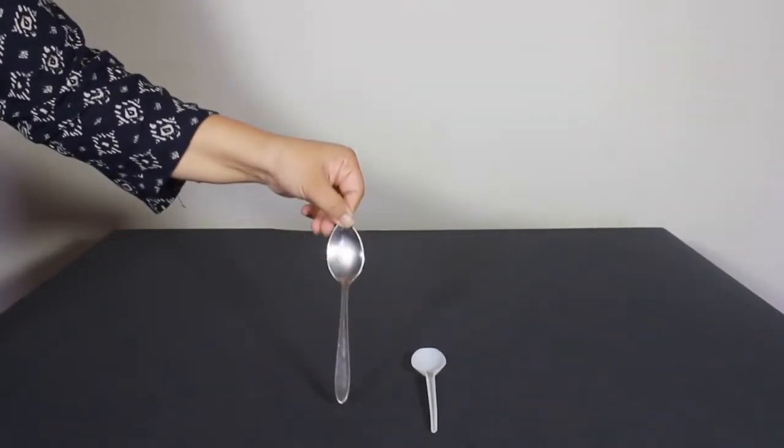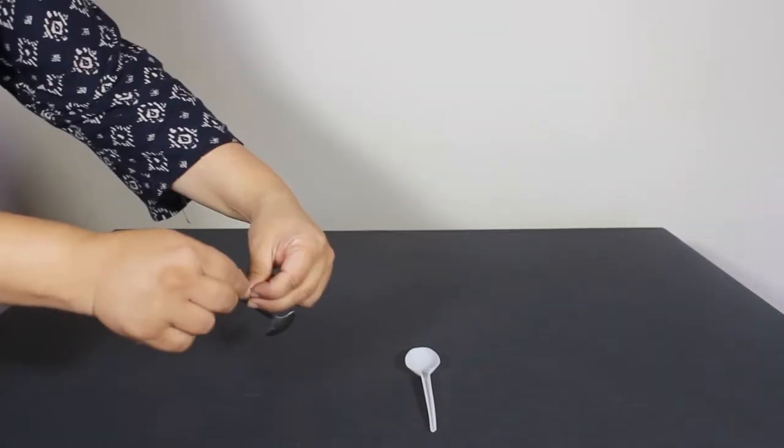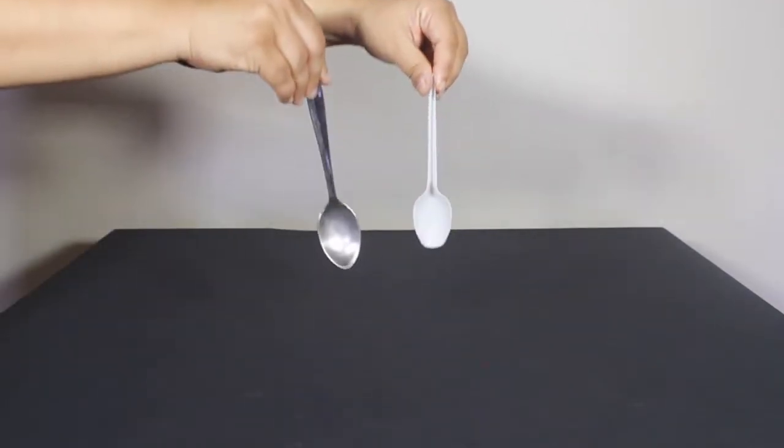Gravity pulls down on everything. Notice both the spoons when dropped fall down on the table.